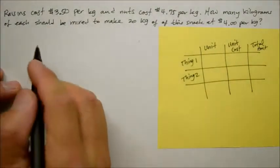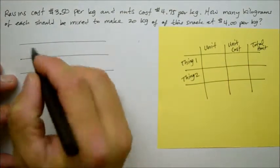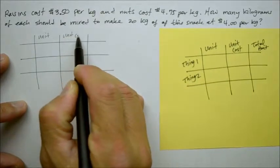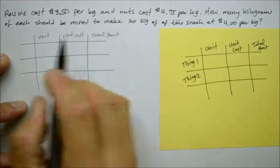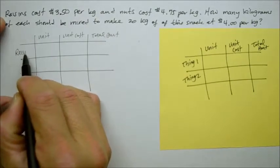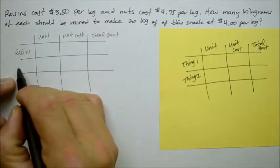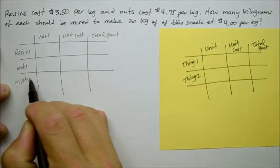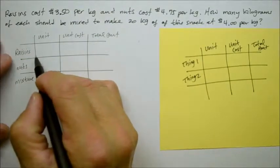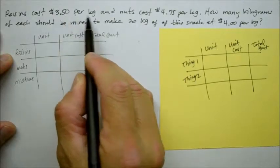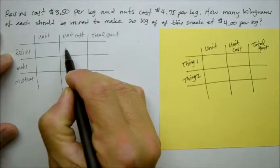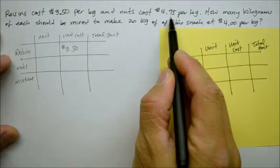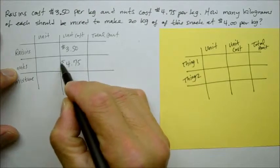Here's the unit. Here's the unit cost. Here's the total amount. Here's thing one, which is going to be the raisins. And the second thing is going to be the nuts. And here is the mixture of raisins and nuts. So it will have a different unit cost. In this case, the raisins cost $3.50 per kilogram. And nuts cost a lot more expensive, $4.75 per kilogram.